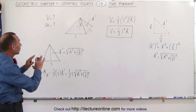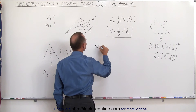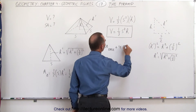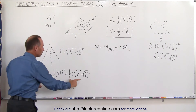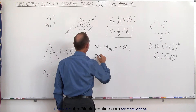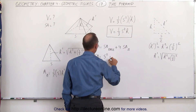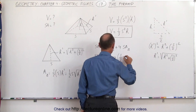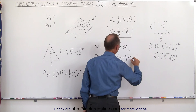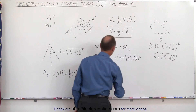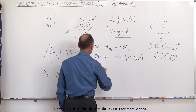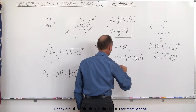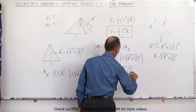Now we're ready to find the surface area of the entire pyramid. The surface area equals the area of the base plus 4 times the area of each triangular face. The base area is s squared, and each triangle has area one-half s times the square root of h squared plus (s/2) squared. Simplifying — since 4 times one-half equals 2 — the surface area equals s squared plus 2s times the square root of h squared plus (s/2) squared.